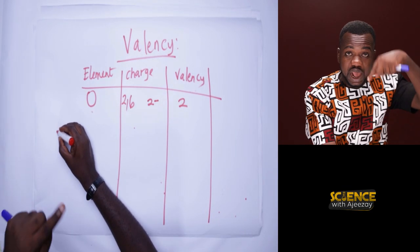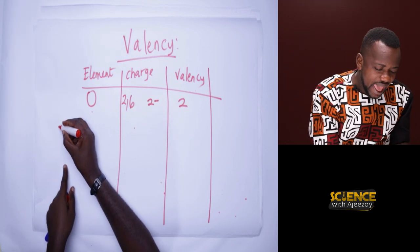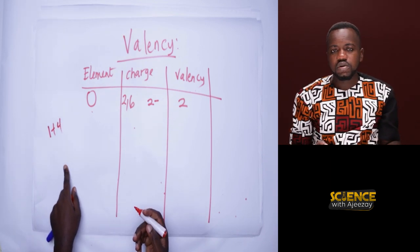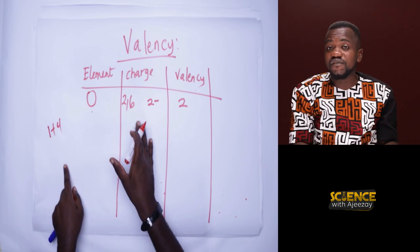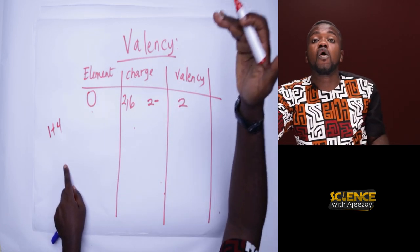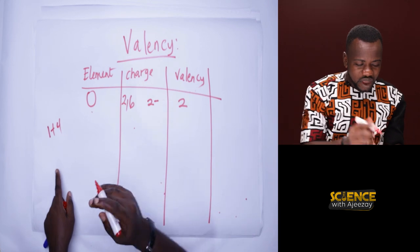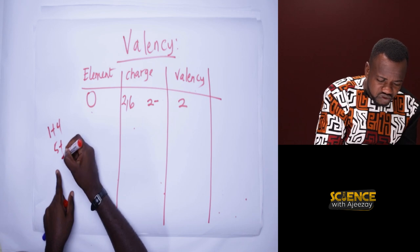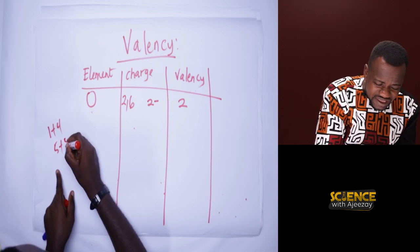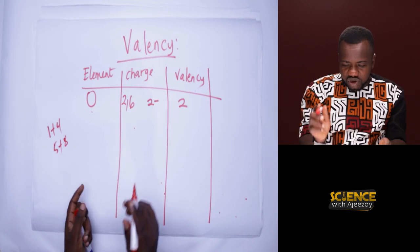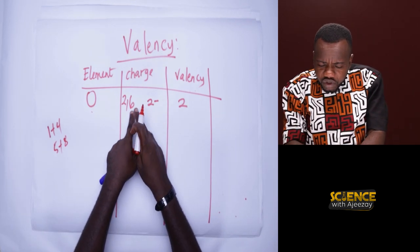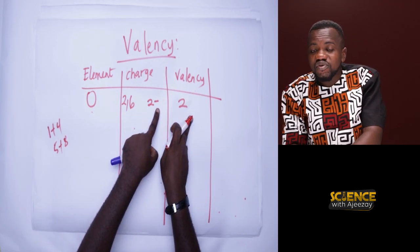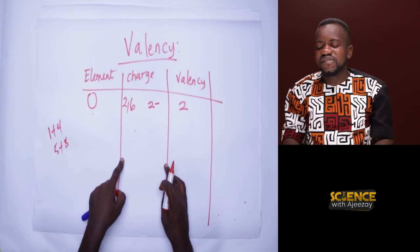Here's the rule: once the number of outer electrons is from one to four, that same number becomes the valency. But once it's from five onwards, you subtract from eight to get the valency. So for oxygen, you subtract eight minus six and get two — that is both the charge and the valency.